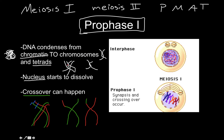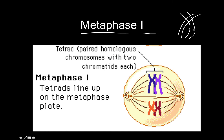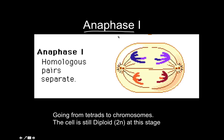To recap prophase one: crossover can happen, the chromatin condenses into chromosomes, those chromosomes stack on top of each other as tetrads, and the nucleus starts to dissolve. The next phase is metaphase one — all those homologous chromosomes, now stacked as tetrads, align in the middle of the cell. Metaphase — think 'middle.' You also see spindle fibers appear, which will attach to those tetrads.